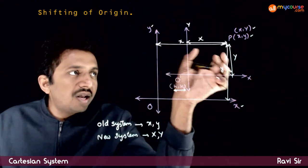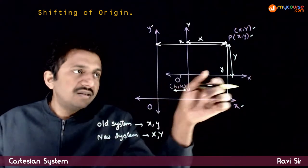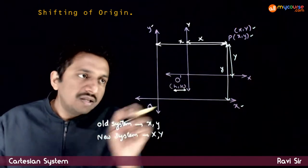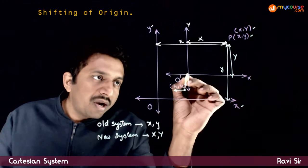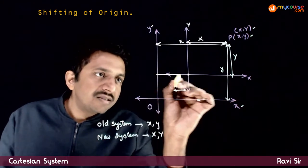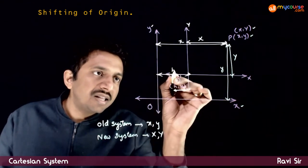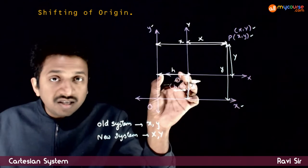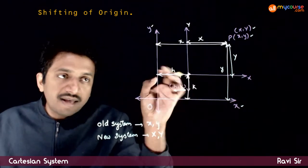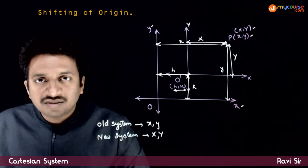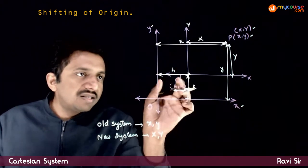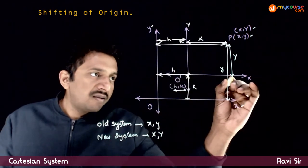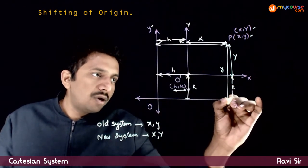Now, what is the relation between small x and capital X, and between small y and capital Y? That relation depends on where the origin is shifted. As you can see, this point is h comma k — meaning this distance is h and this distance is k. h is the distance of this point from the y-axis, and k is the distance from the x-axis. So if this is h, this portion is also equal to h; and if this is k, this length is also equal to k.